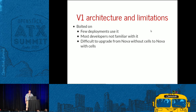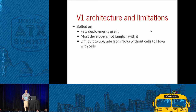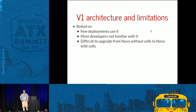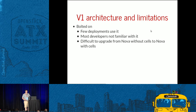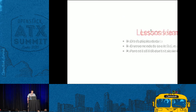Cells V1 is shunted out of the way in the code base — very transparent but also very hidden. It's also difficult to upgrade from Nova without cells to Nova with cells. If you start your deployment and later want the scaling ability cells provides, there's really no path for doing that — you should have started with it from the beginning. But it's also very complex, so we don't recommend starting with it from the beginning. You get into this weird situation.